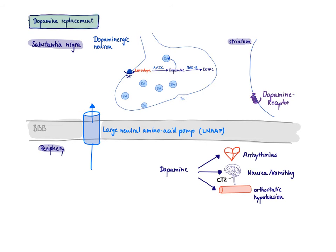Let's first start talking about dopamine replacement. Here I have drawn the blood-brain barrier. Here is the brain, and down there is the periphery. Here is the substantia nigra where neurons are projected to the striatum. That's my dopaminergic neuron in the nigrostriatal pathway. There's dopamine release, and it can work on the dopamine receptors on the postsynaptic neuron.